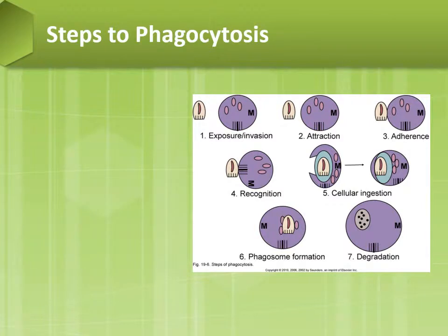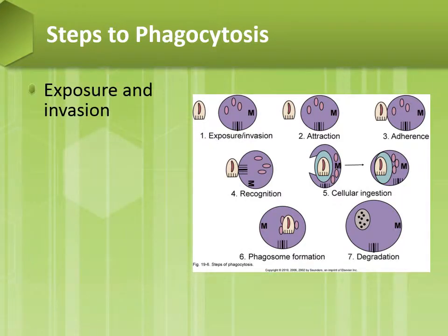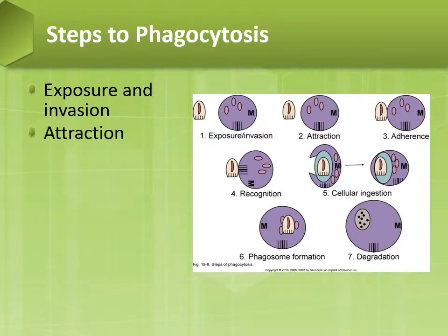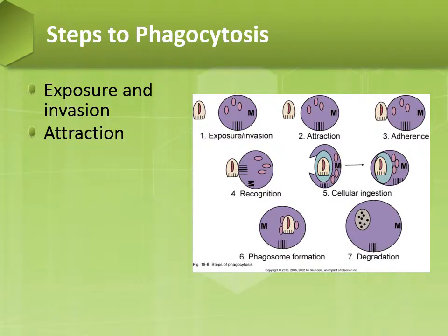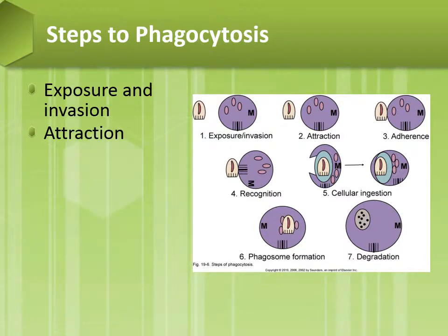Phagocytosis is a key process of inflammation that engulfs and destroys invading microorganisms. First, there must be an exposure and invasion. Attraction is the second step because phagocytosis can occur only when the white blood cell comes into direct contact with the target — some substances attract neutrophils and macrophages. Damaged tissues secrete chemotaxins and release debris that can combine with the surface of invading foreign proteins.